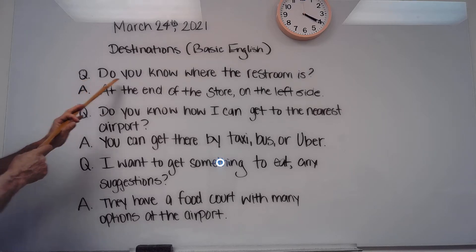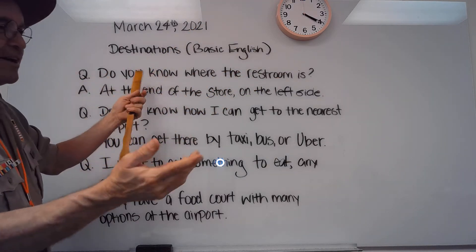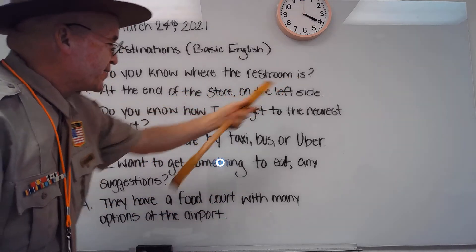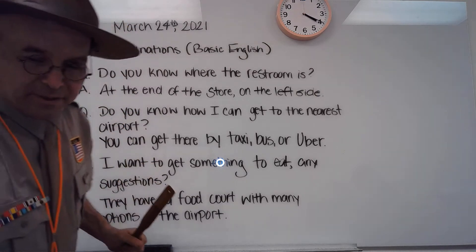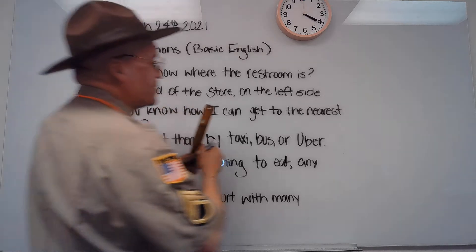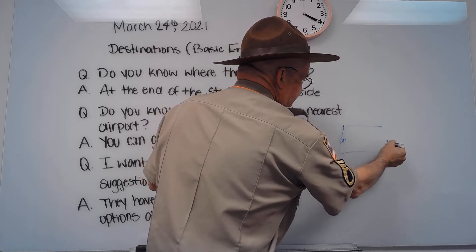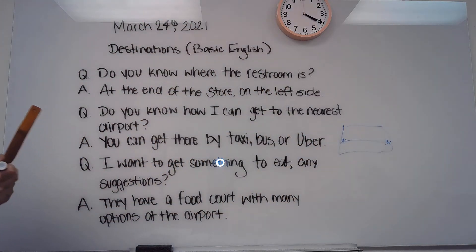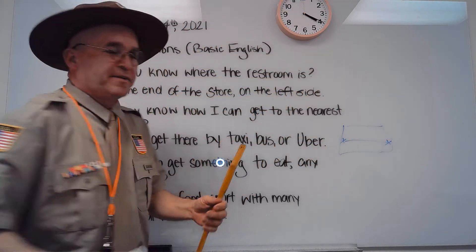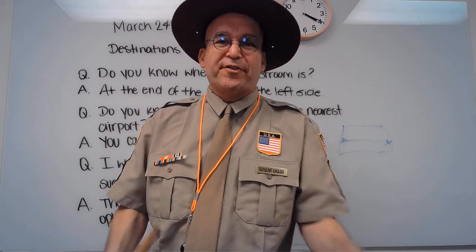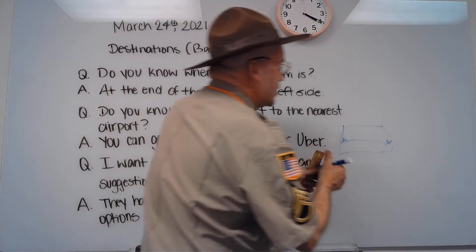Question: Do you know where the restroom is? Answer: At the end of the store, on the left. 'At the end' means like this is a store, and you're telling them it's at the end — it's over here. At the end of the store, on the left. This is left, this is right. At the end of the store, on the left — so it would be over here.